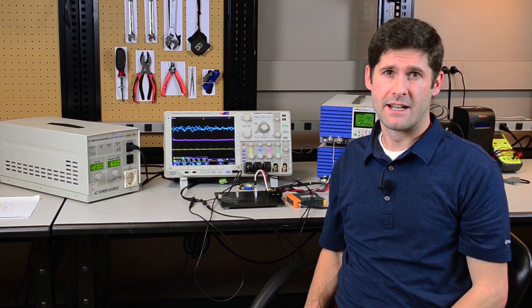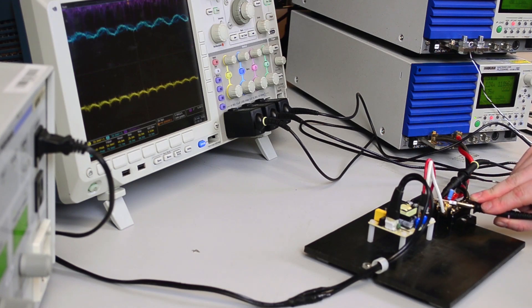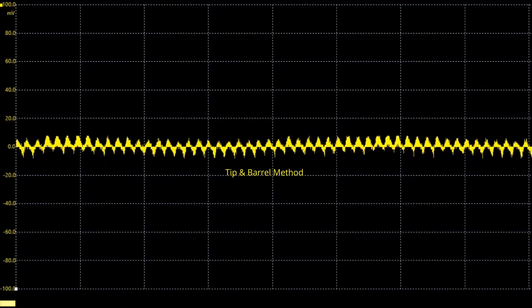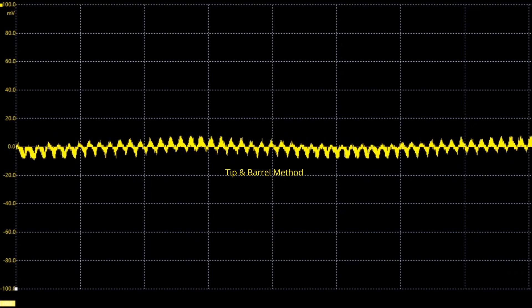Now we'll perform the test using the tip and barrel method. You can see that our loop area is slightly larger due to the location of the connectors. This method can be difficult as there's not always an easy place to access and place your probe across.